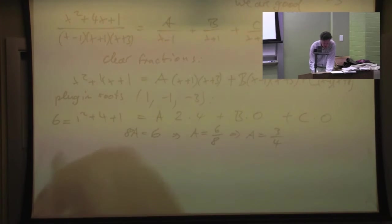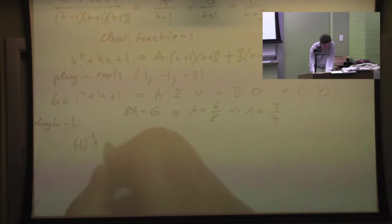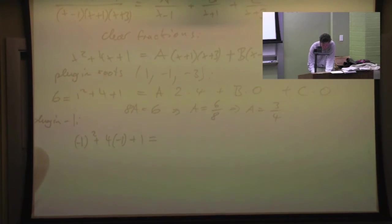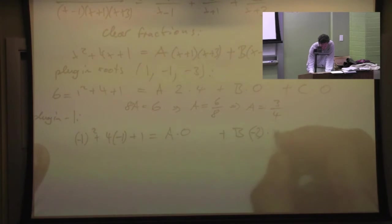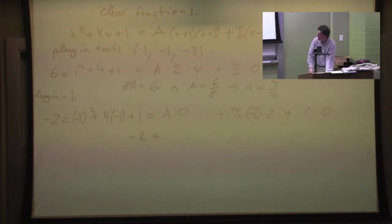Now we're going to do the minus 1. So we get minus 1 squared plus 4 times minus 1 plus 1. If you plug in minus 1, then this will be 0. The B term will be minus 2 here and then 2 there. And the C term will be 0. So you get, on the left, you get 2 minus 4 is minus 2. And on the right, you get minus 4B. And you deduce that B is 1 half.